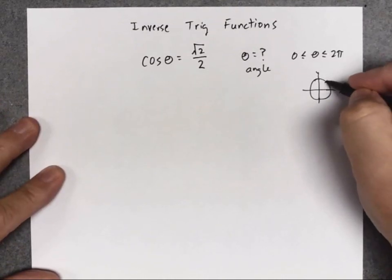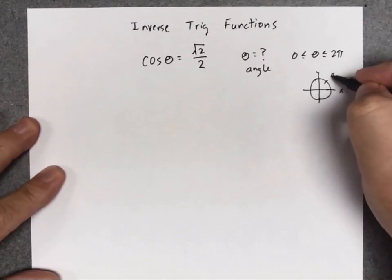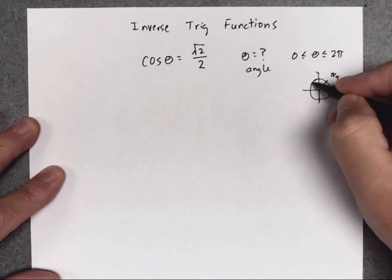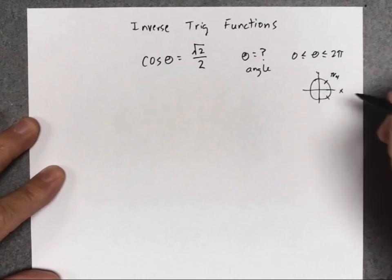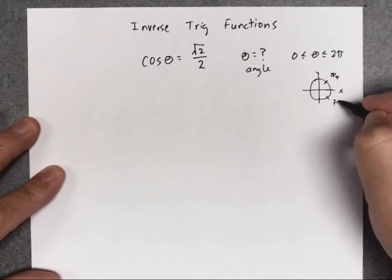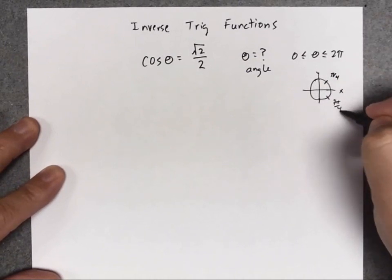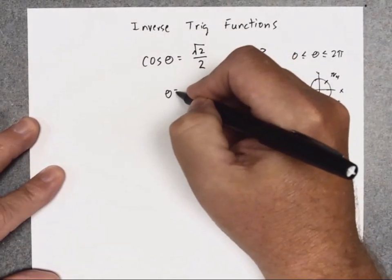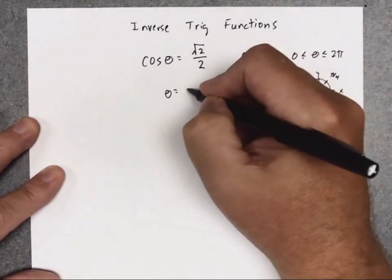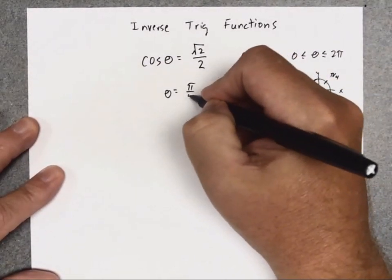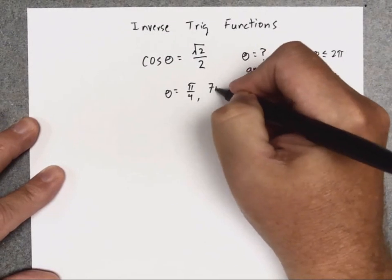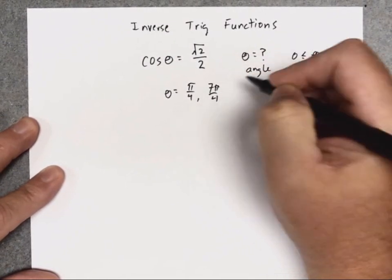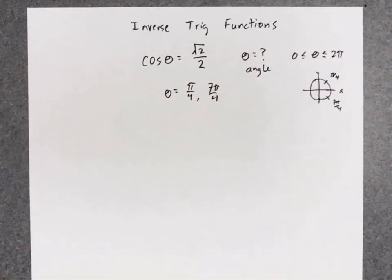You realize right here it's π/4. Then in quadrant 4, you're at 7π/4. So there are actually two solutions: π/4 and 7π/4.